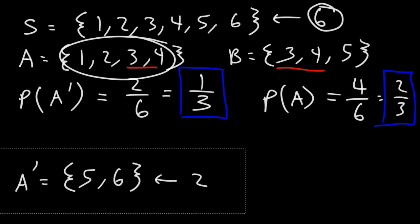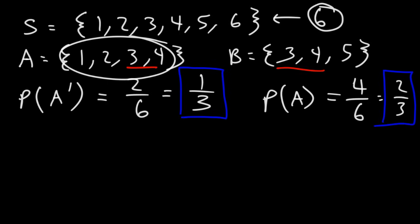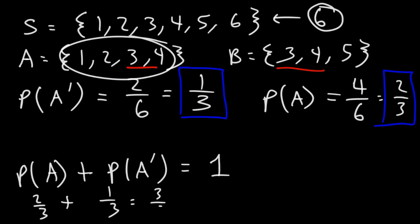Now, there's something that you want to take notice of. Notice that the probability of event A occurring plus the probability of the complement of event A occurring adds up to one. Now, P of A is two over three, and P of the complement of A is one over three, that is three over three, which is one.